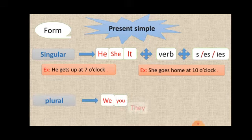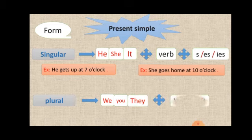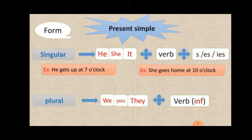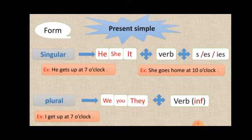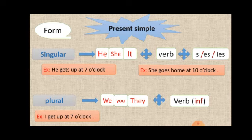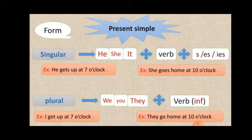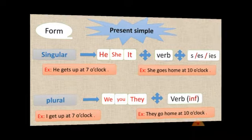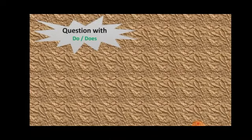Let's see plural. We and you and they plus verb in infinitive. Plural. This is Singular. And with plural: We, you and they plus verb in infinitive. For example, I get up at 7 o'clock. They go home at 10 o'clock. I put just the verb without adding anything. The verb in infinitive means verb without adding anything to it.